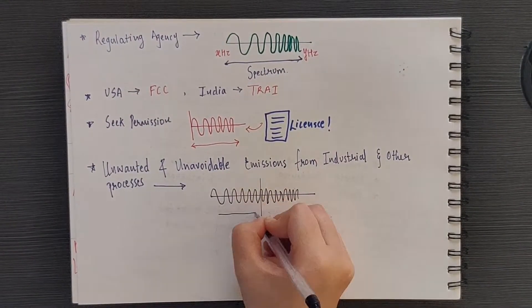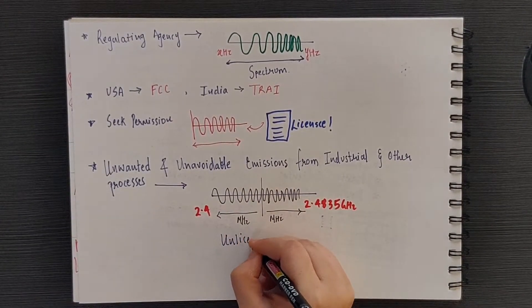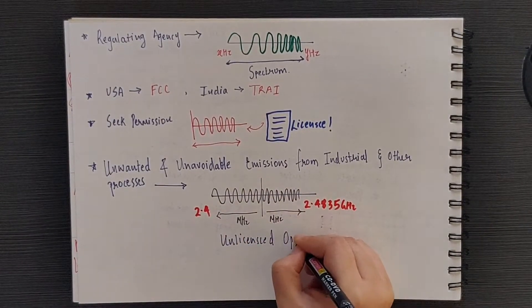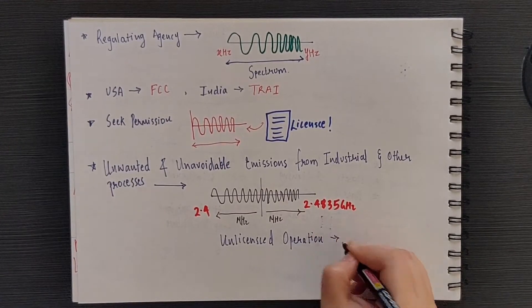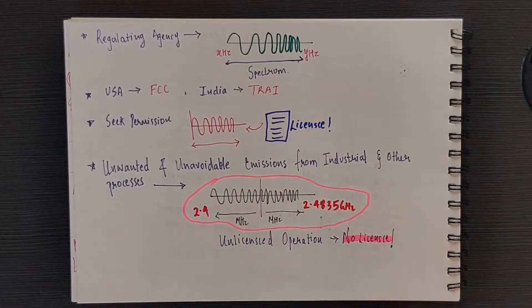Which means that this band of 2.4 to 2.4835 gigahertz was designated for unlicensed operation. That is, you do not need a license to operate your device in this range. That's how the 2.4 to 2.4835 gigahertz was born.